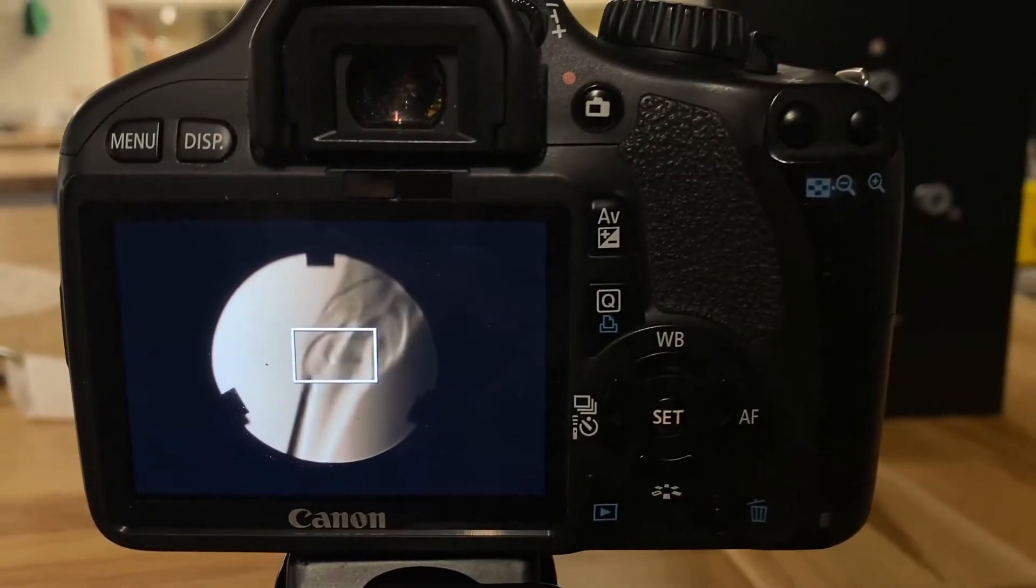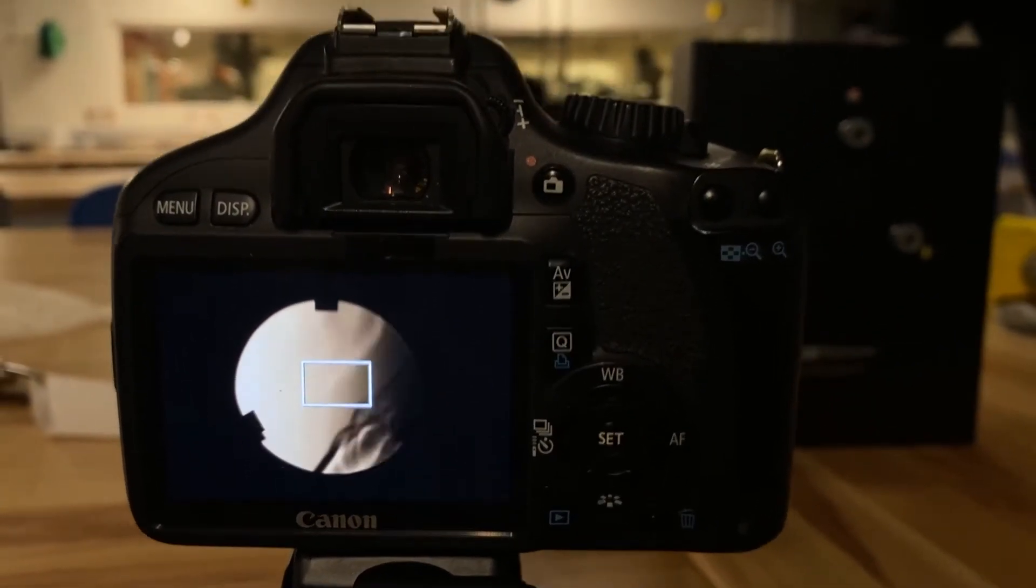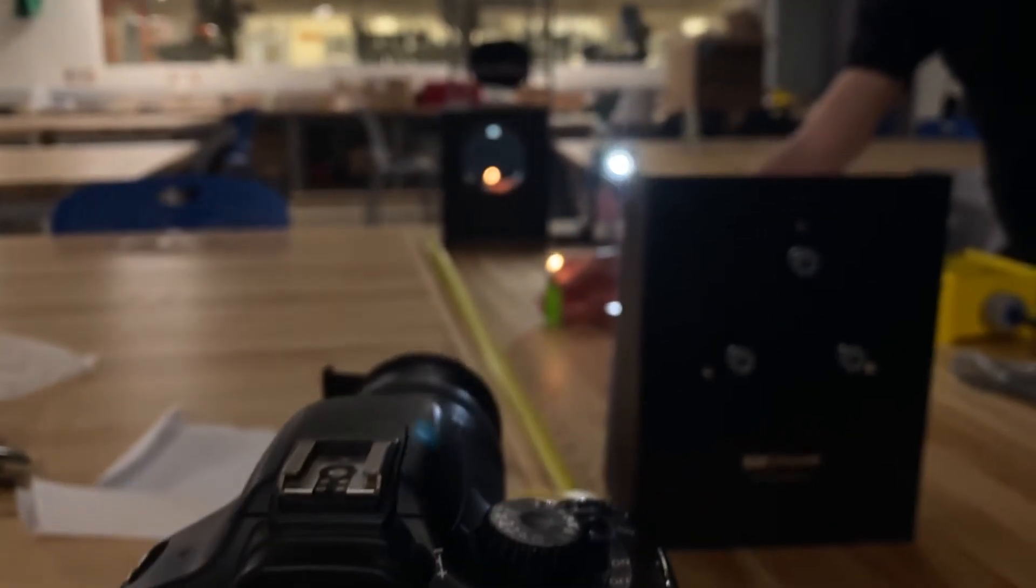This method utilizes refraction off of two concave mirrors in order to make visible any differences in density within the frame of the camera. This is an example of our initial Schlieren results using the flame from a candle to test effectiveness.